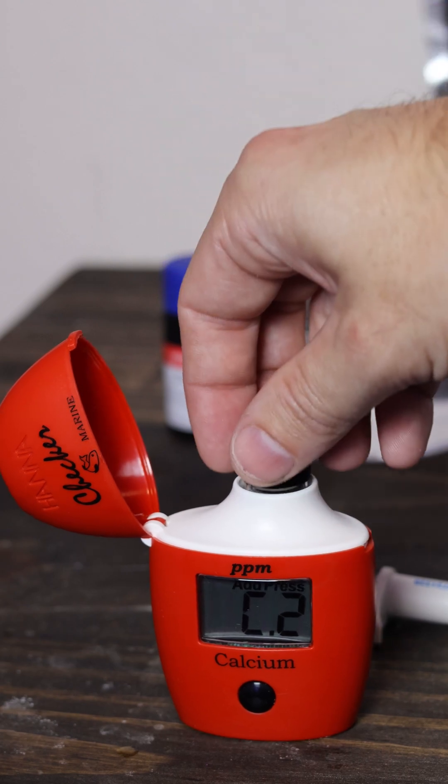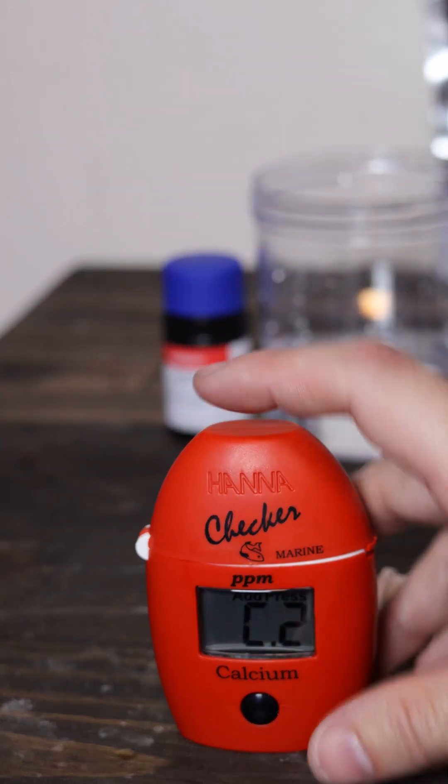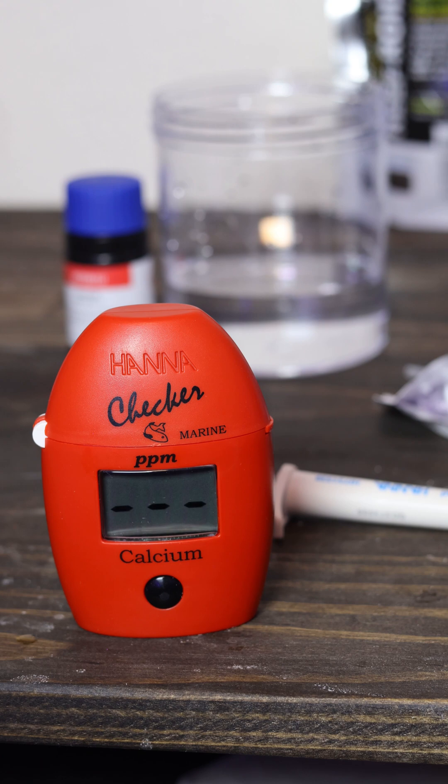Insert the test tube into the Hanna checker the same way that you did before. Press the button and then after a short period of time you should have your reading.